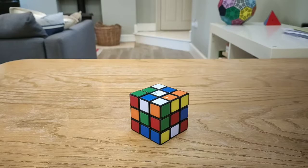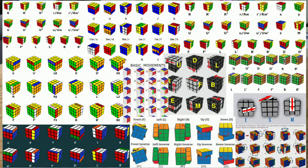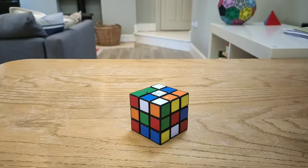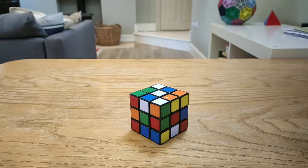So the first thing you need to know is notation, and these letters on the screen right now correspond to moves on the cube. Just learn it — it's pretty easy. I'll give you some time. You don't even have to pause the video, just learn it. Okay, so by now you should have learnt all that notation. That's just the first step, it's pretty easy, just the thing you need to know.